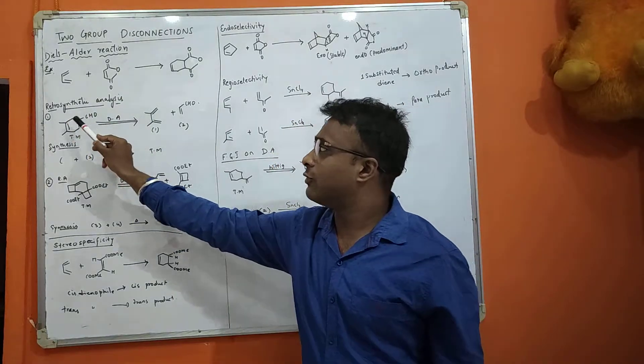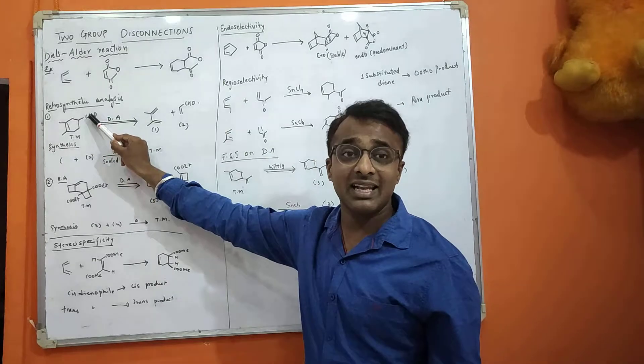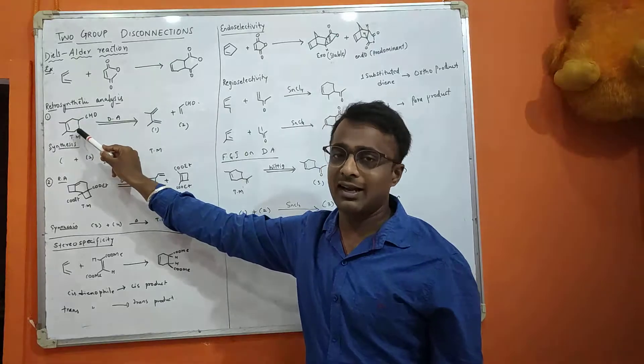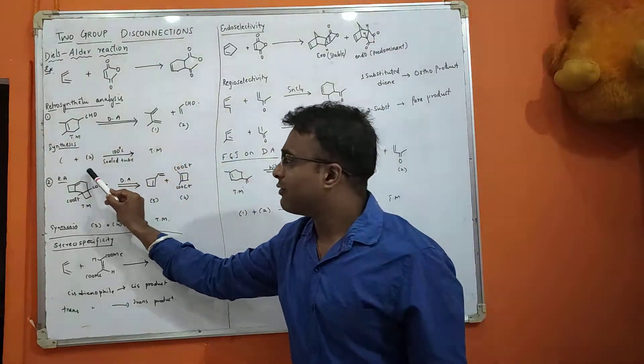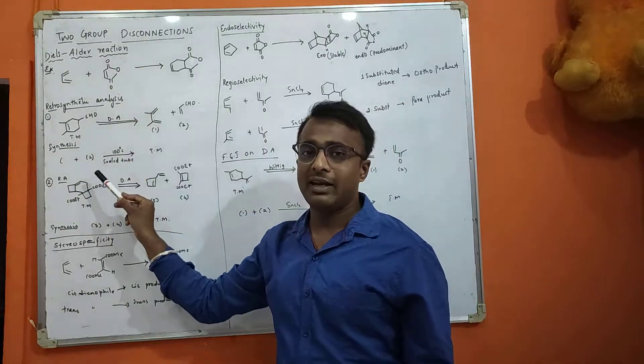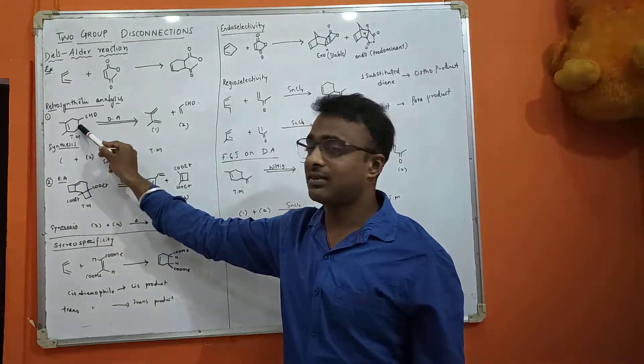Now I will take one molecule. This is a cyclohexene type molecule which has an electron withdrawing group at a certain place. This will undergo retrosynthetic analysis and you will get a diene and dienophile. Any complicated molecule can also be synthesized by Diels-Alder reaction. You can see in the second example which is much more complicated than the first one.